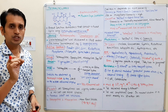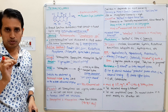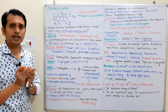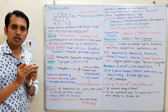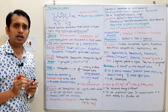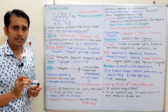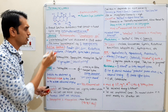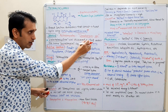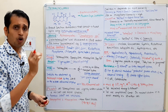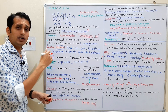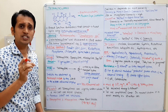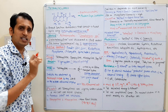The tetracyclines come from Streptomyces species. The major source of tetracyclines is Streptomyces aureofaciens. Streptomyces aureofaciens is the source of the first tetracycline, known as chlortetracycline.